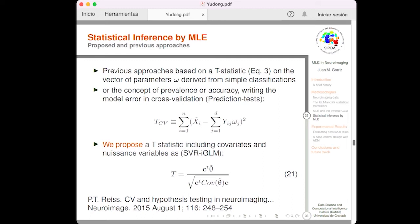Well, to sum up, to conclude the methodological section, we now summarize the most common machine learning-based methods for statistical inference so far, and we will define the proposed one. Previous approaches were based on a T statistic on the vector of parameters omega, derived from simple binary classifications. Or, other approaches are based on the concept of prevalence or accuracy, writing the model error in cross-validation, the so-called prediction test, as the difference between the desired response and the model approximation. We then propose a T statistic using all the methods and ideas previously presented in this presentation, including covariates and nuisance variables as the support vector regression inverse GLM, in this way, in equation 21.